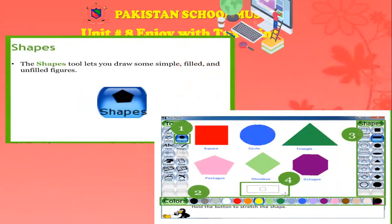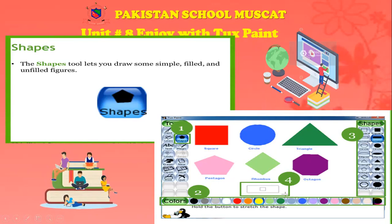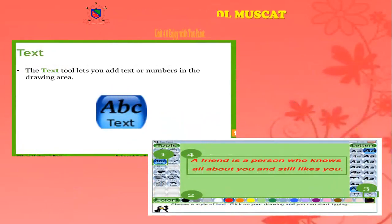Next we have the shapes tool. Just like the geometrical shapes you study in mathematics — geometry — the shapes tool lets you draw simple filled and unfilled figures such as square, circle, triangle, and pentagon. First you need to select the shapes tool next to the line tool, then select the color of your choice, then from the shapes area select the geometrical shape you want, and finally simply drag to draw it.